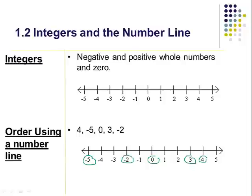Once I've ordered my numbers I can make statements about them. I could say negative five is less than negative two, negative five is less than zero, negative five is less than four — just like we know three is less than four. When it's on the number line it's easy to see: whatever number is on the left is going to be less than. I always like to say left is less.